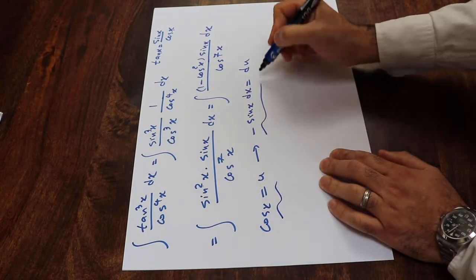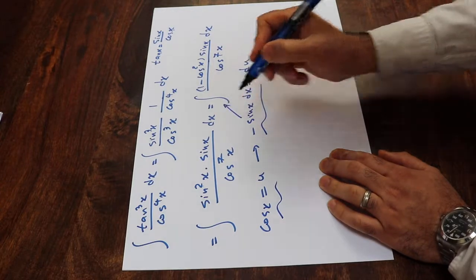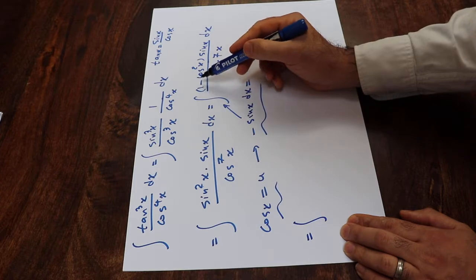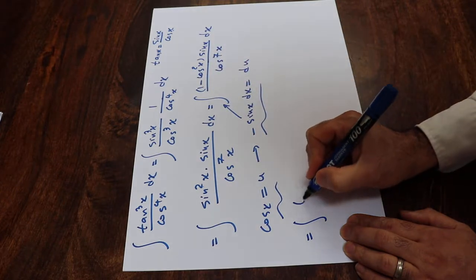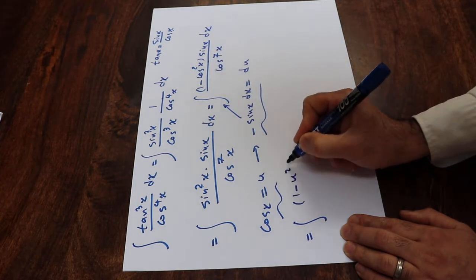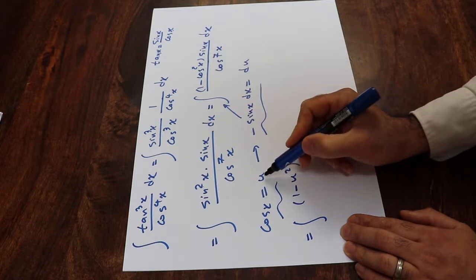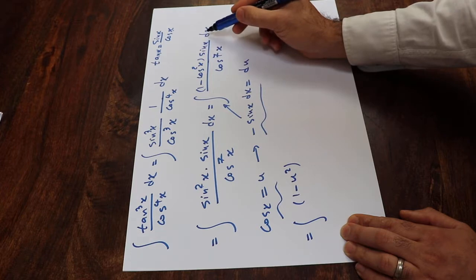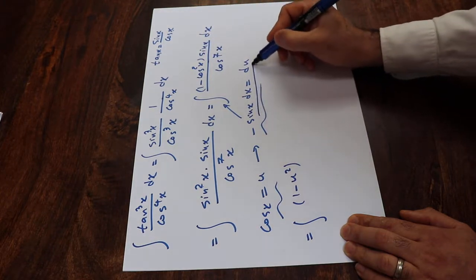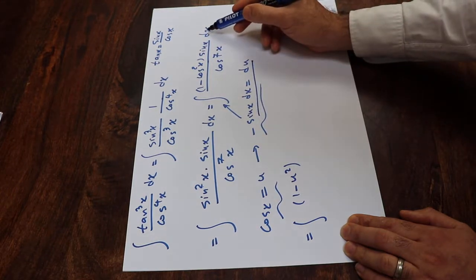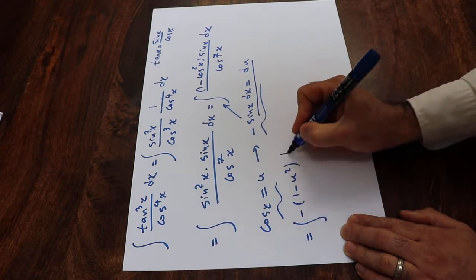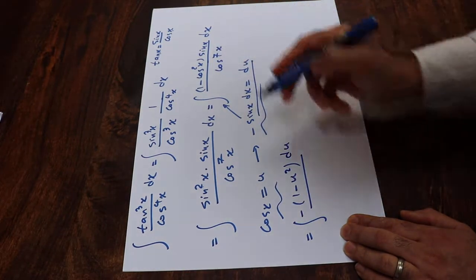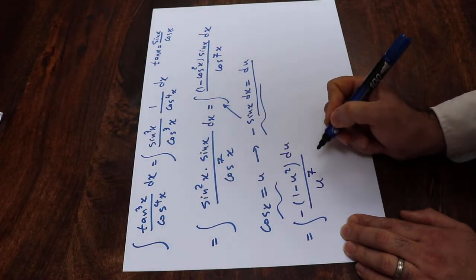All you need to do is substitute these expressions into the integral. You can rewrite this integral as: instead of 1 minus cosine²x I write 1 minus u², because cosine x is u so cosine²x will be u². Instead of sine x dx I write minus du, and instead of cosine⁷x I write u⁷.